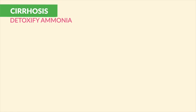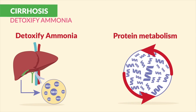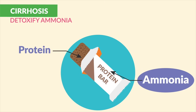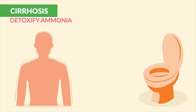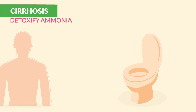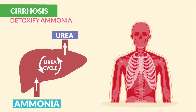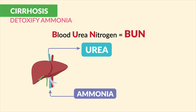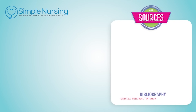The second rule of the liver is to detoxify ammonia, which is a byproduct of protein metabolism. Think of ammonia as a protein wrapper — it's trash. The body absorbs the protein and discards the ammonia as waste. The liver converts ammonia into urea, pushing it into the blood as blood urea nitrogen (BUN), which is then excreted by the kidneys as urine.